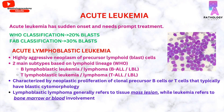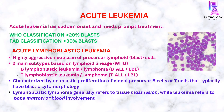The acute leukemias have sudden onset and require prompt treatment. According to the WHO classification, more than 20% blasts should be present in the bone marrow to be classified as acute leukemia. However, according to the French-American-British classification, there should be more than 30% blasts. In today's video I will be talking about acute lymphoblastic leukemia, also known as ALL.